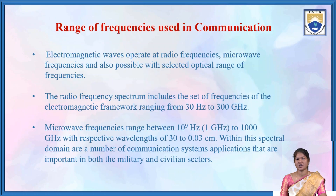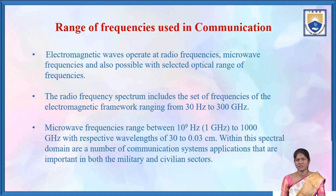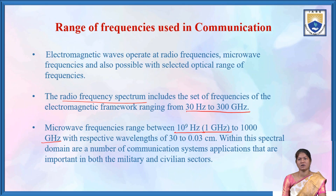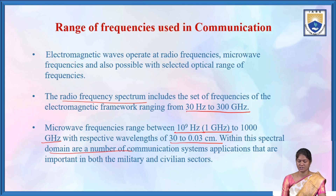What is the range of frequencies used in the communication system? Electromagnetic waves operate at radio frequencies, microwave frequencies, and also within selected optical ranges. The radio frequency spectrum ranges from 30 Hz to 300 GHz. Microwave frequencies range between 10⁹ Hz to 1000 GHz, corresponding to wavelengths of 30 to 0.03 centimeters. Within this spectral domain are a number of communication system applications important in both the military and civilian sectors.